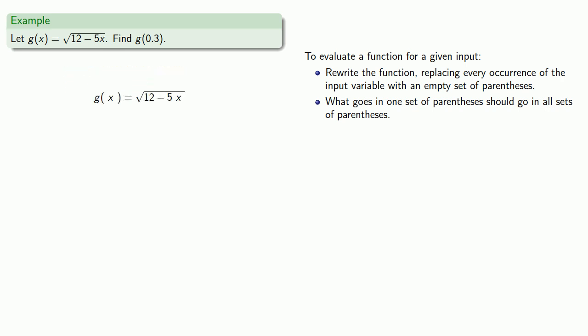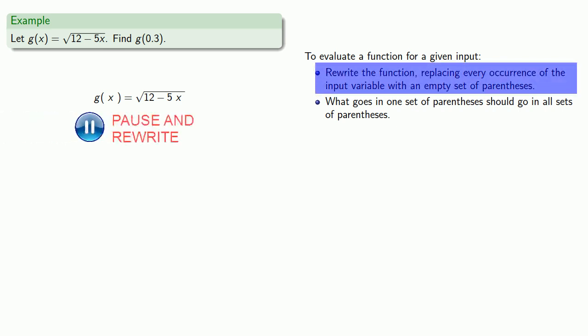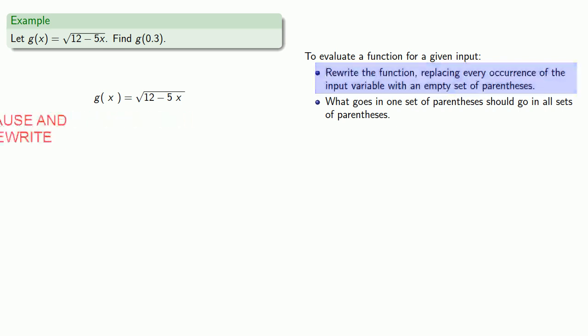So again, let's rewrite our function, and we'll leave behind an empty set of parentheses. So that's g of blank is square root 12 minus 5 blank. Again, we've dropped every occurrence of x and left behind an empty set of parentheses.